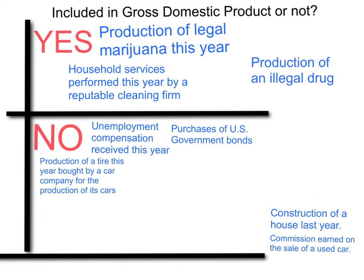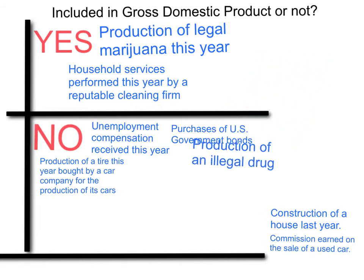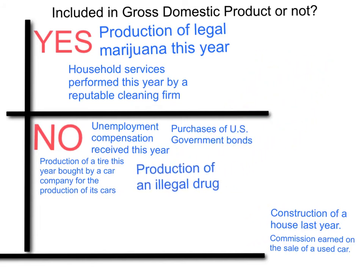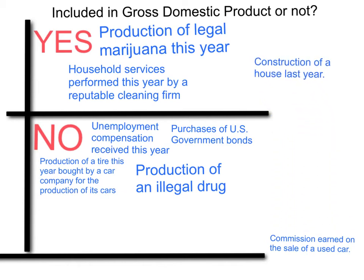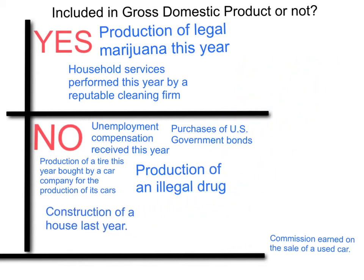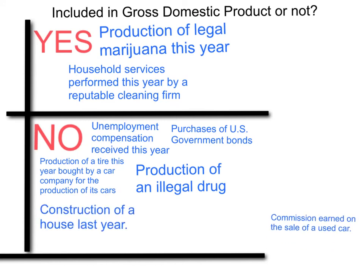Anything illegal — production of an illegal drug, anything illegal — is not included. So the opposite of legal marijuana: illegal drugs go in the no column. Construction of a house last year: goods that were produced in previous years are not included. Only products produced this year are included, so this one was produced last year and is not included.